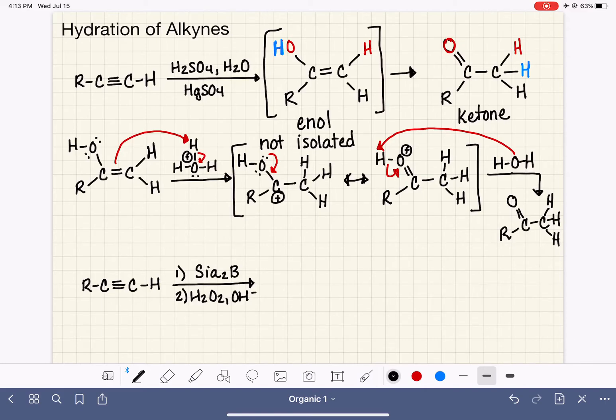For an anti-Markovnikov hydration, the process looks very similar to the anti-Markovnikov hydration of alkenes, the hydroboration oxidation reaction. In that reaction, it's a two-step process, just like we see here with the alkynes. And the reagents for step two are the same, whether we're working with an alkene or an alkyne.